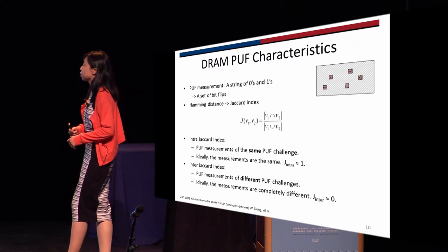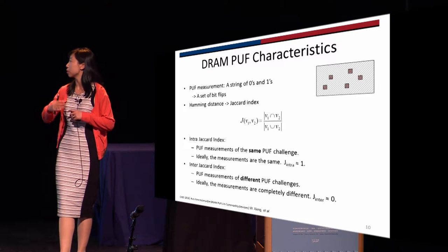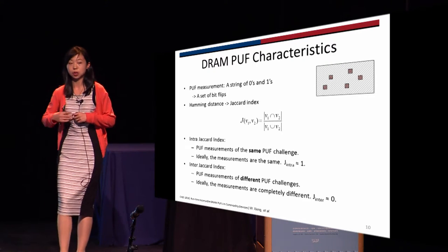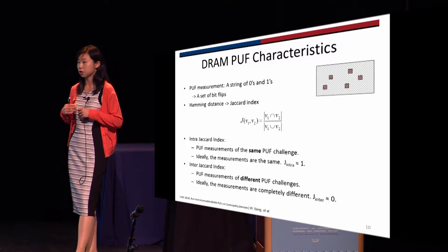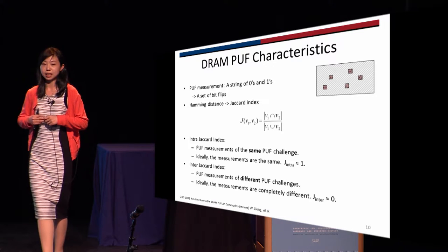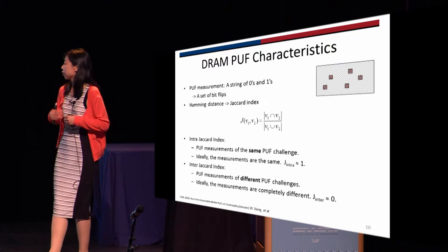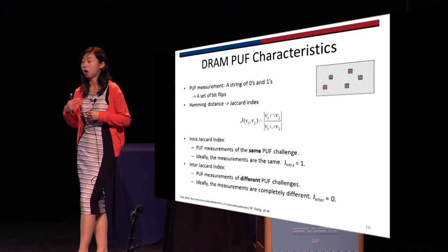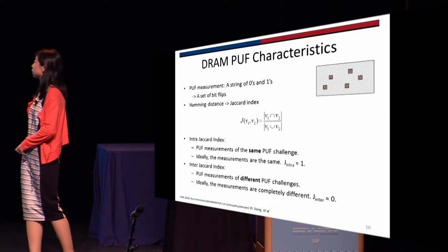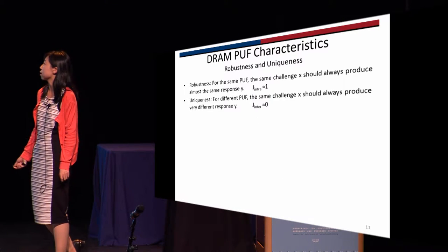We use intra-Jaccard index and inter-Jaccard index to evaluate robustness and uniqueness of the PUF. The intra-Jaccard index is used to compare the similarity of PUF measurements for the same PUF challenge on the same logical PUF — ideally it should be close to one. The inter-Jaccard index compares the similarity of PUF measurements for different challenges on different logical PUFs — ideally it should be close to zero.